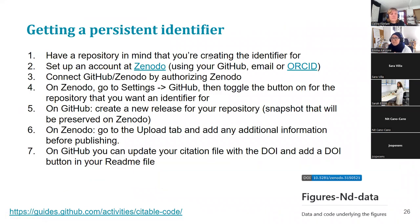First of all, you have to have a repository — we've already got a repository that we've been using today. You also have to have a Zenodo account. You can actually use your GitHub login, an email, or even your ORCID login details to sign up for the account. Then you have to connect your GitHub to Zenodo by authorizing it to happen.